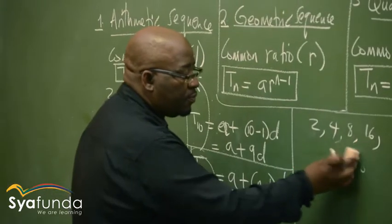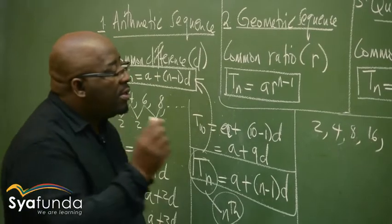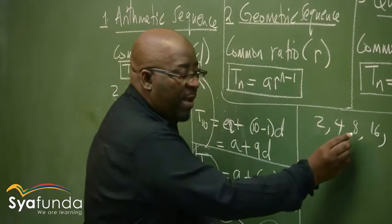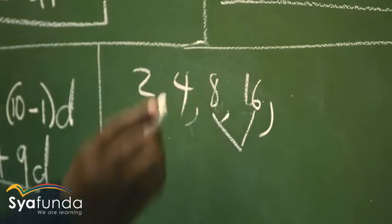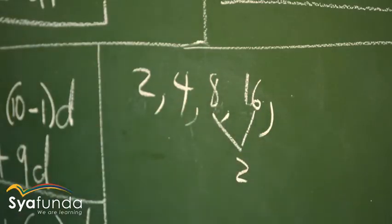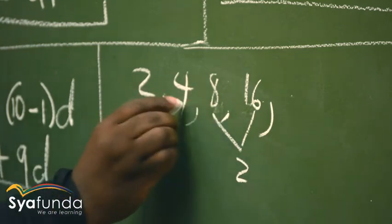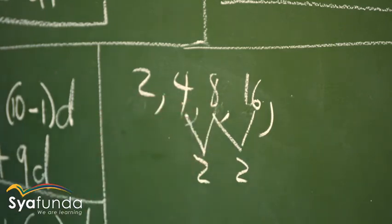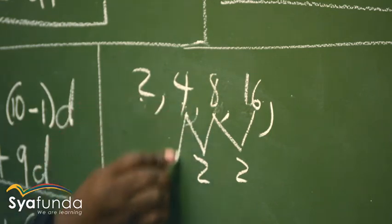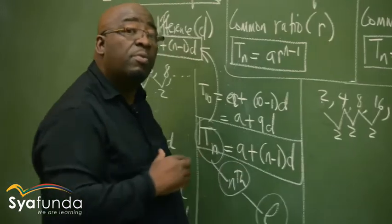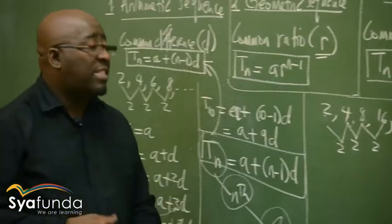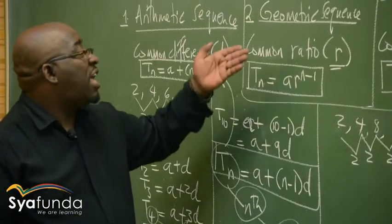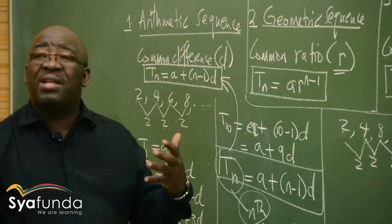Let's check it. Look at division now: 16 ÷ 8 = 2. What is 8 ÷ 4? It also gives us 2. Something common is coming up. What is 4 ÷ 2? It is 2. When we divide, it's a ratio. So this sequence has a common ratio. Therefore it is a geometric sequence — that's how you identify these sequences.